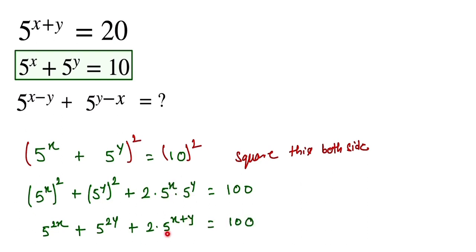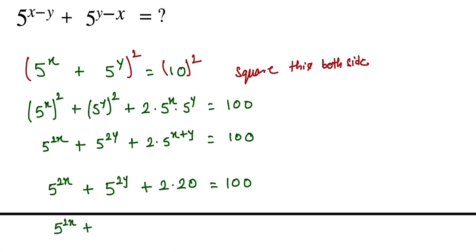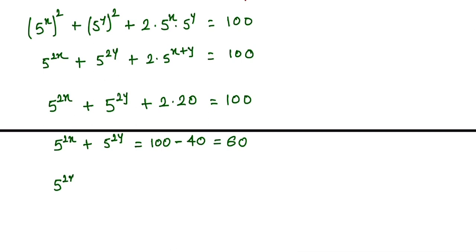Now, 5 to the power x+y is given as 20 in the question. Substituting, we get 5 to the power 2x plus 5 to the power 2y plus 2 times 20 equals 100. Since 2 times 20 is 40, we get 5 to the power 2x plus 5 to the power 2y equals 60. This is our first result.